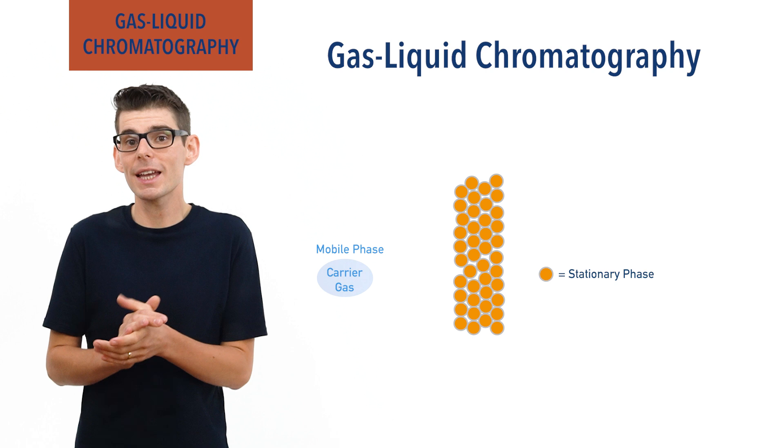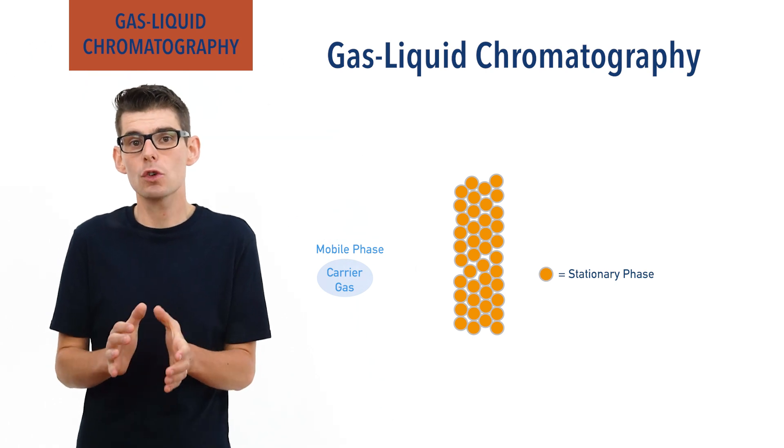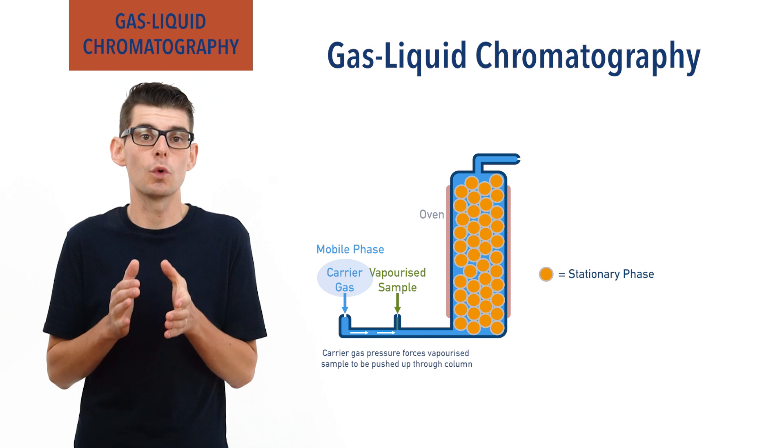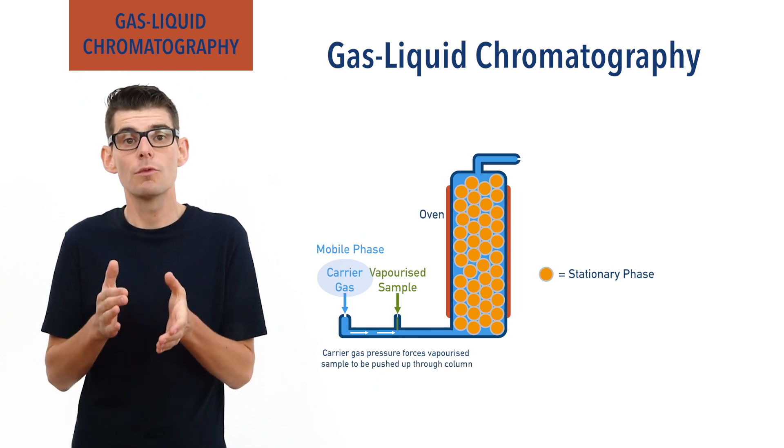The carrier gas is put under pressure to make sure it is forced through a column and an oven is used to ensure all substances in the sample remain as vapor.